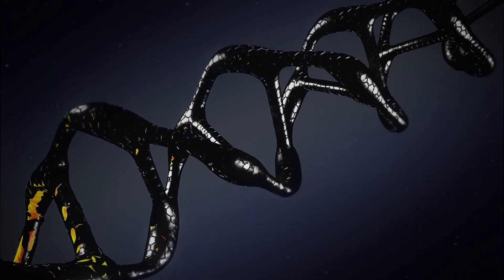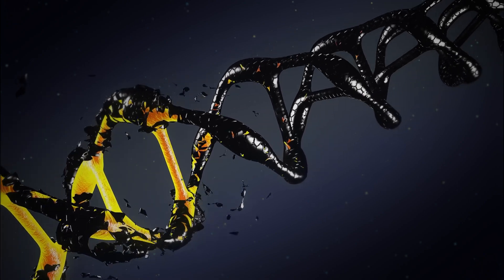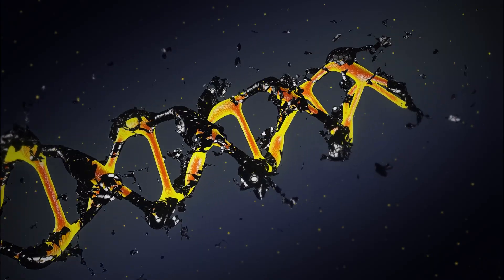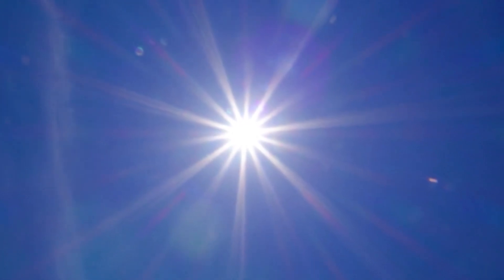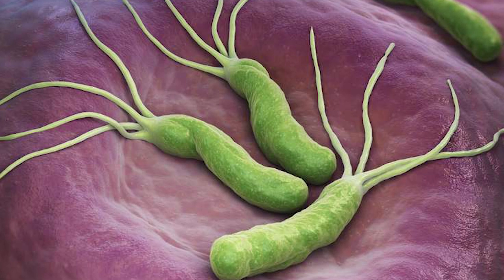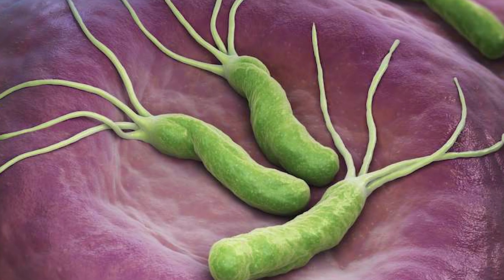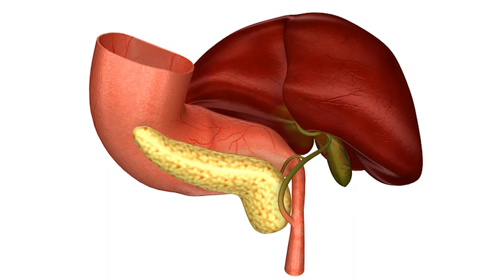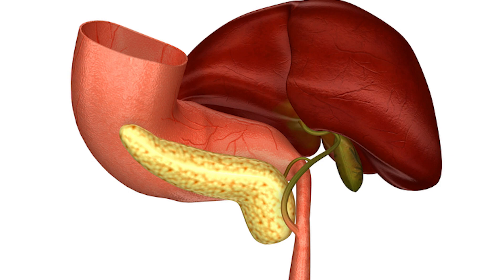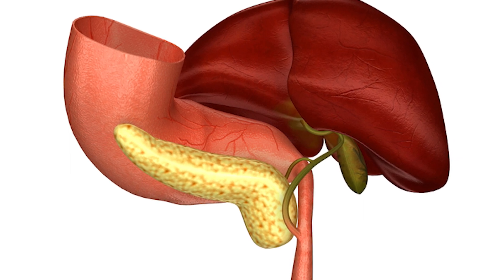Additional DNA damage can arise from exposure to exogenous agents. Tobacco smoke causes increased exogenous DNA damage, and these DNA damages are the likely cause of lung cancer due to smoking. UV light from solar radiation causes DNA damage, leading to melanoma. Helicobacter pylori infection produces high levels of reactive oxygen species that damage DNA and contributes to gastric cancer. Bile acids at high levels in the colon of humans eating a high-fat diet cause DNA damage and contribute to colon cancer.